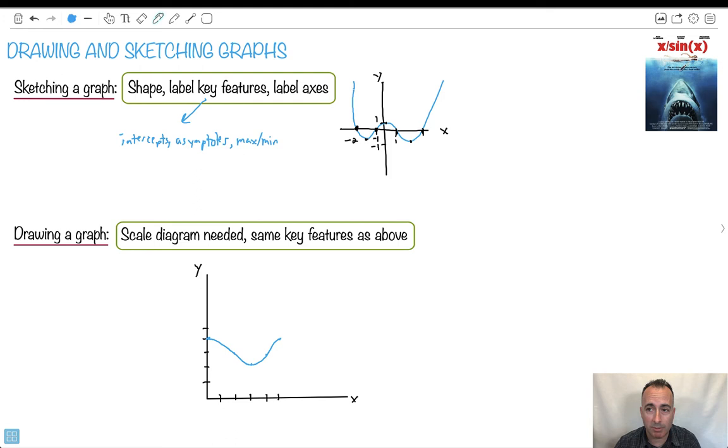You might be wondering why I put this here. You ever seen the movie Jaws? It's a really cheesy old movie. I loved it as a kid. It's supposed to be Jaws, right? Why did they put X over sine X? Actually, I saw someone posted this meme on Reddit and I thought it's so brilliant. Why is it X over sine X? Let me show you. I actually did the graph of X over sine X. Look what it looks like. X divided by sine X. Doesn't it kind of look like teeth? So I thought that's actually brilliant.